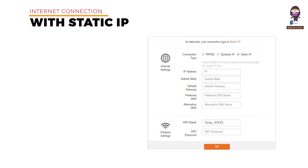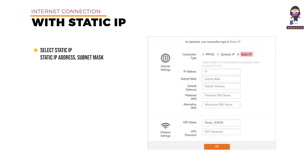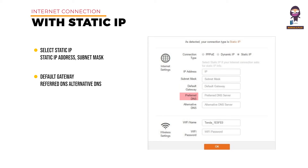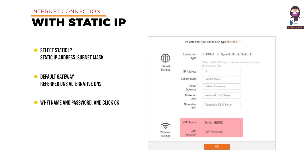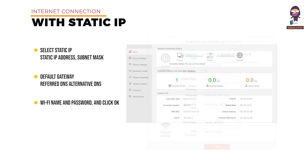Setting up an internet connection with a static IP address: select Static IP, enter your static IP address, subnet mask, default gateway, preferred DNS, and alternative DNS provided by your internet service provider. Set a Wi-Fi name and password and click OK. After the proceeding procedure, the status page appears. If you can surf the internet, it is displayed at connection status — the internet is accessible.